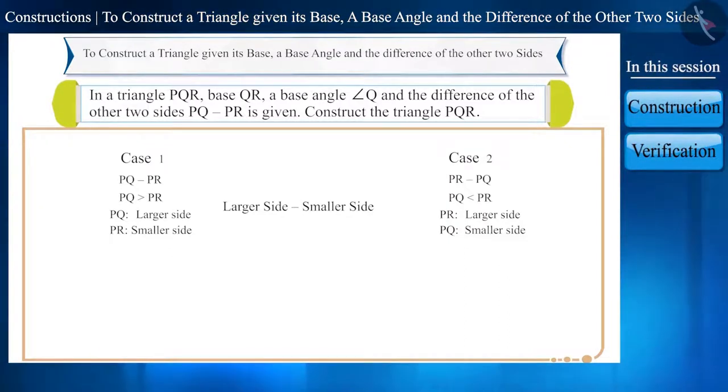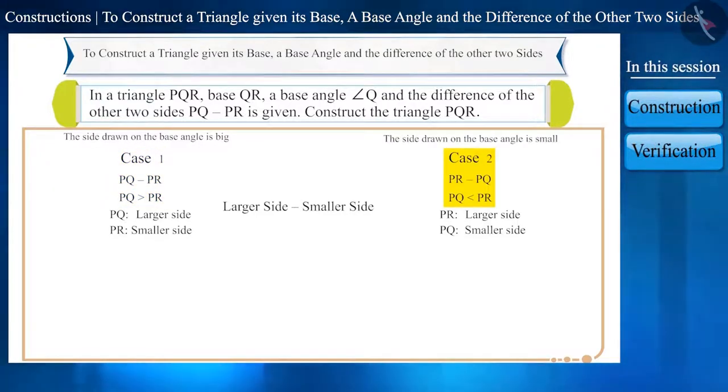And friends, as per the difference given in the sides, the construction of a triangle is done in two ways. Case 1, the side drawn on the base angle is big, PQ greater than PR, that is PQ minus PR is given. In this video, we will learn the construction with the information given in case 1.